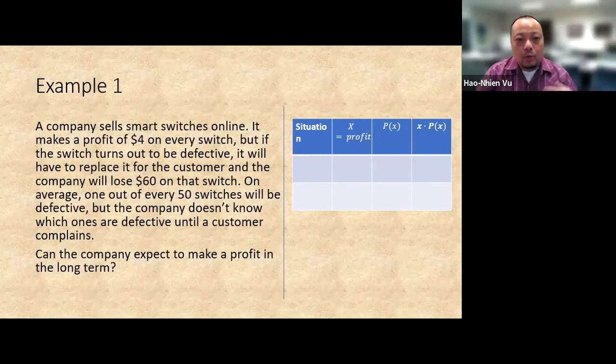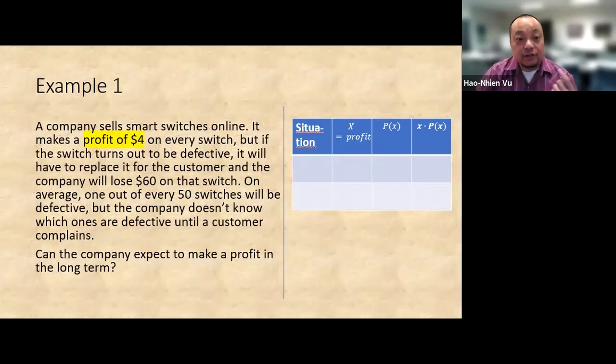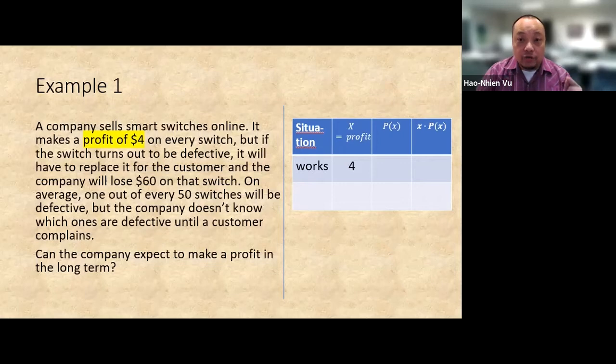Now let's fill it in. What are the possible values of x, the profit? Here's one possible profit. X could be four dollars in profit, so put that in, x equals four. But also put in the description. This is important. The company gets a profit when the switch works, so write that down in the table.